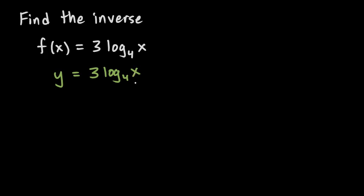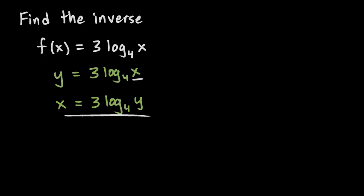And then we switch the x and the y. So everywhere you see a y, write an x, and everywhere you see an x, write a y. And that gives us x equals 3 times log base 4 of y. Then we take this equation and solve it for y. When we do, the result we end up with will be the inverse of the original function.